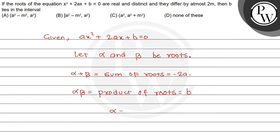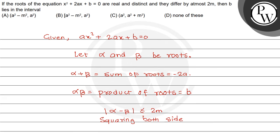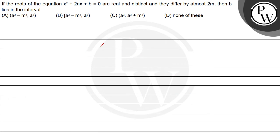Now we are given that |alpha − beta| ≤ 2m — the difference is at most 2m. Squaring both sides: (alpha − beta)² ≤ 4m². We can write this as (alpha + beta)² − 4·alpha·beta ≤ 4m².